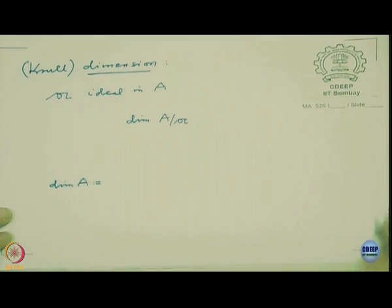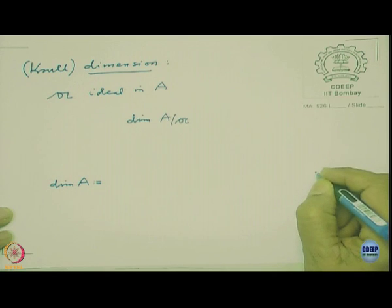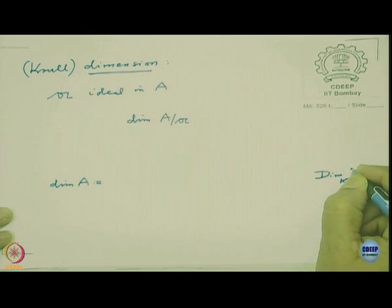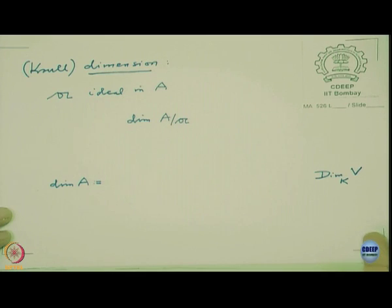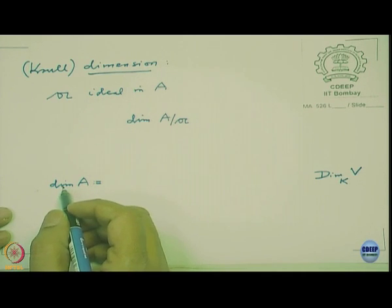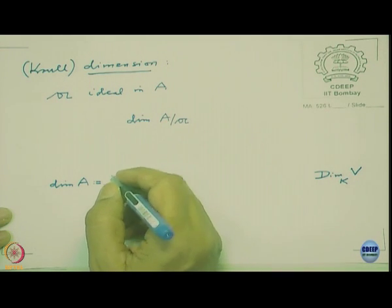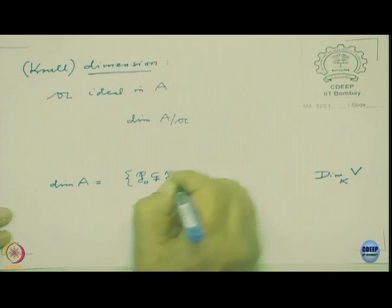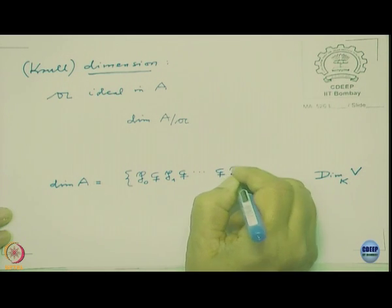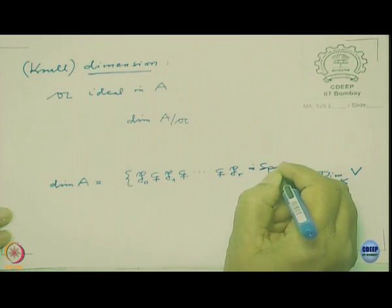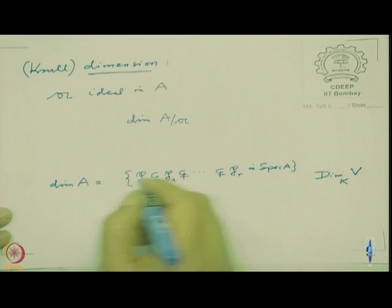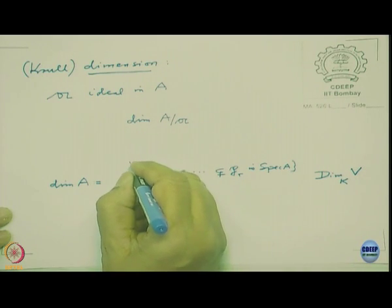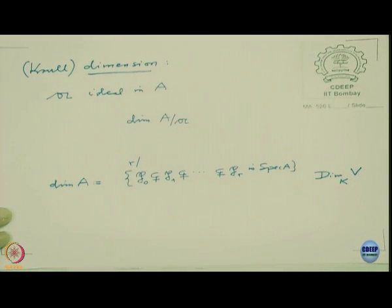One should not confuse this with vector space dimension, which I denote by capital Dim with a subscript. For a vector space E over a field K, the vector space dimension is the cardinality of a basis. The Krull dimension — denoted by small d — is defined by looking at chains of prime ideals: P_0 ⊂ P_1 ⊂ ... ⊂ P_r, proper chains in Spec A. The length is r; take the supremum over all such r — that is the Krull dimension.